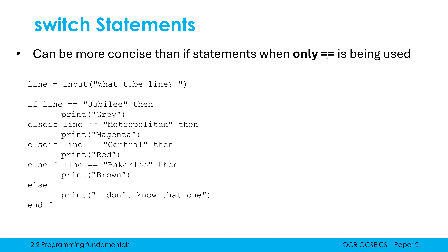Let's look at a different example with a string. I'm asking the user to enter a tube line for the London Underground. As you might know, each line has a different colour — Jubilee line is gray, Metropolitan is magenta, and so on. We enter a tube line and it tells us what colour the line is represented by. This is a candidate for switch because we're only ever testing for equality — if I was doing greater than or less than, I couldn't use switch.